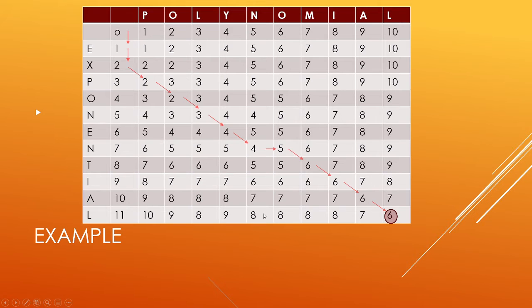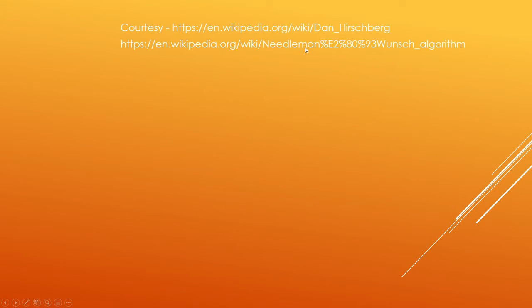But the point is that this algorithm requires order MN space and order MN time. So the problem with it, obviously, is that order MN space could be very large when you have gene sequences involved, and so how do we solve that problem? And so for that, one of the algorithms that the book mentions, or it kind of details it a little bit, is the Dan Hirschberg algorithm.